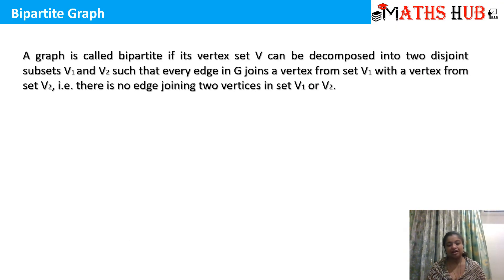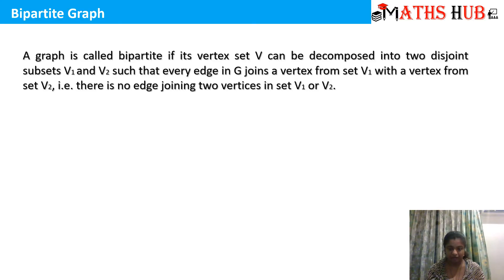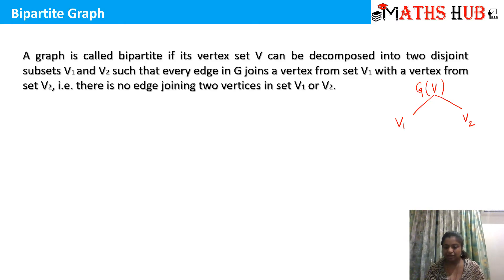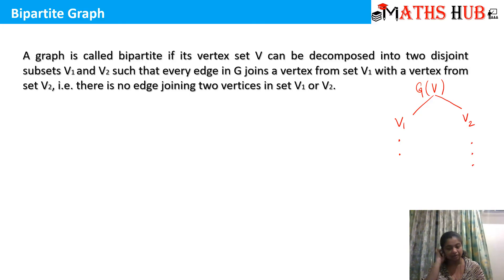What is the definition of a bipartite graph? A graph is called bipartite if its vertex set V can be decomposed into disjoint subsets V1 and V2 such that every edge in G joins a vertex from set V1 with a vertex from set V2. That is, there is no edge joining two vertices both in set V1 or both in set V2. Such a graph is said to be a bipartite graph.